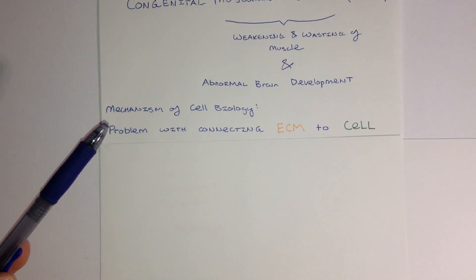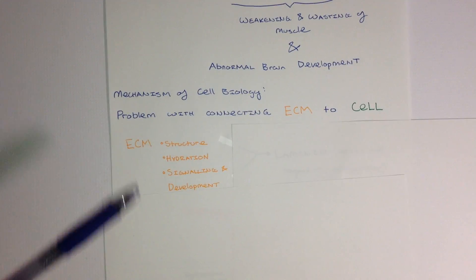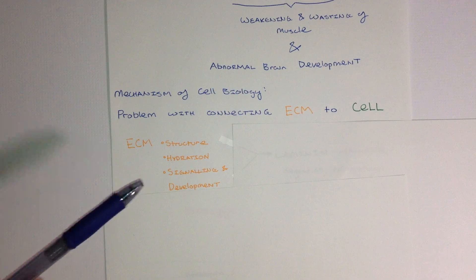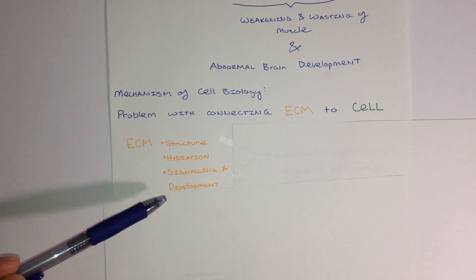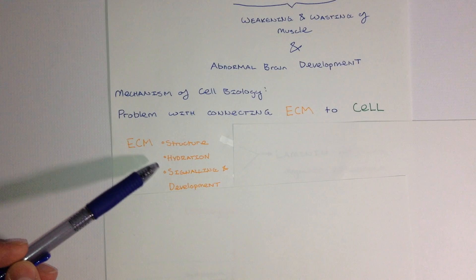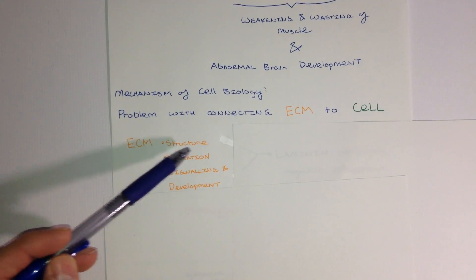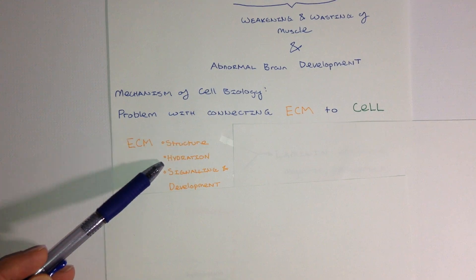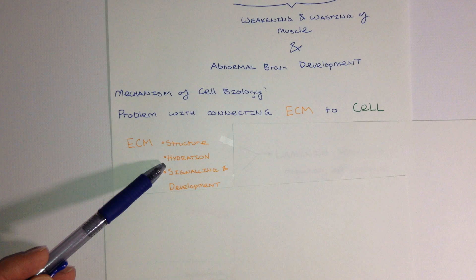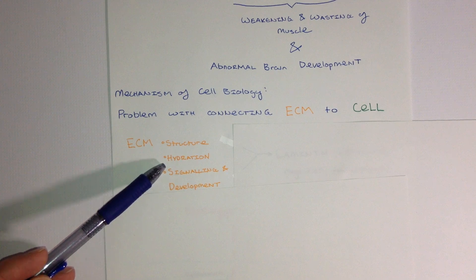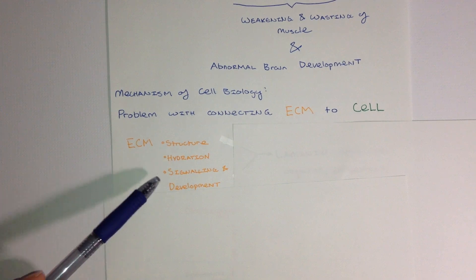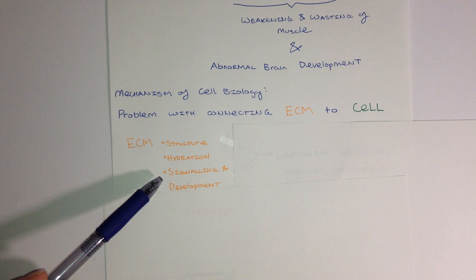Well, what is the extracellular matrix? The extracellular matrix is everything that is found outside of a cell. The ECM provides structural support through proteins such as collagen and elastin. It supplies hydration to the cell and support of interstitial tissue through proteoglycans. And it functions in signaling and development of cells.